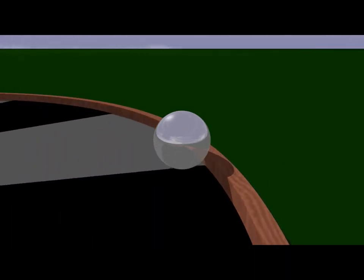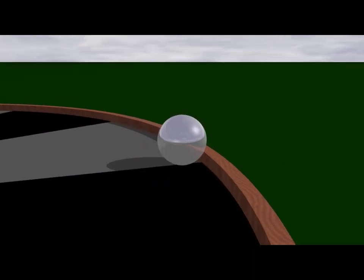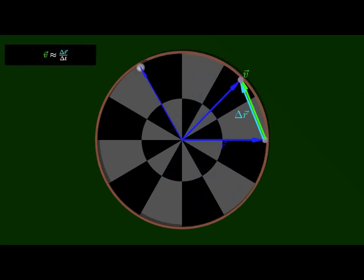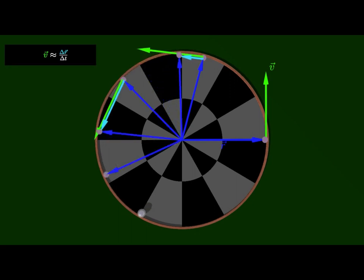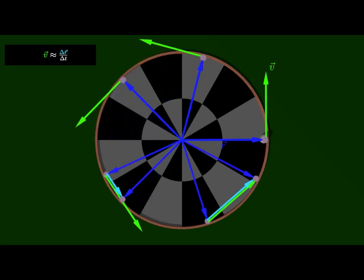In uniform circular motion, an object travels around a circle at a constant speed. The velocity of the object is the rate of change of position with respect to time. This velocity can be estimated by examining the change in position over a short time interval. The instantaneous velocity is then the limit of this estimate as the length of the short time interval goes to zero. Note that the direction of the velocity vector is always tangent to the circle.